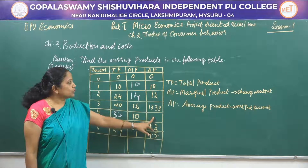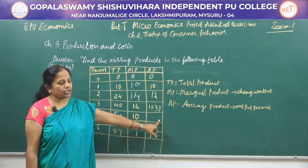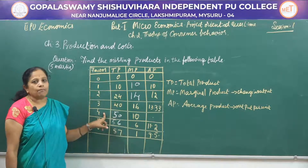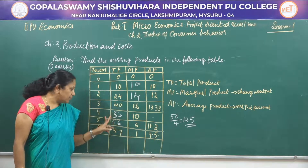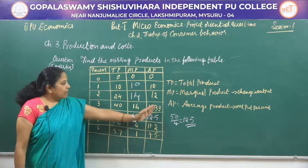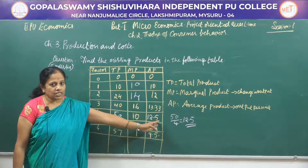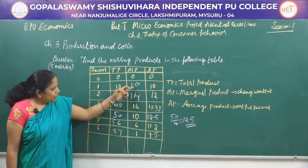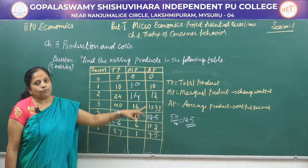Now for the average product: the only missing average product value in the table is calculated as 50 divided by 4 — that is, total product divided by the number of units, which equals 12.5. So the missing average product is 12.5. If you give the answers for all 5 missing values, you can easily score 5 marks.